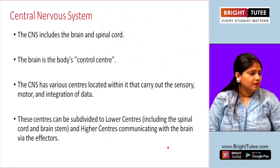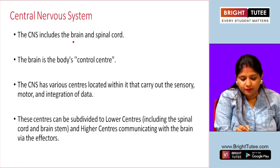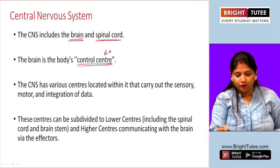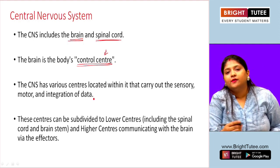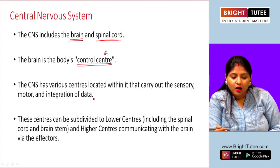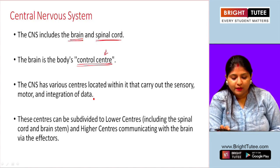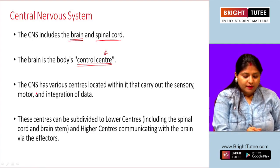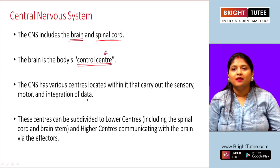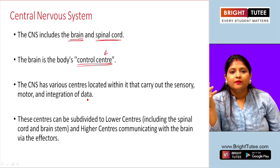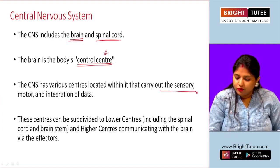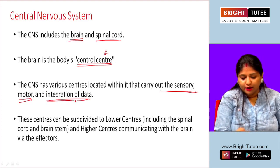The central nervous system includes the brain and spinal cord. The brain is the body's control center — it controls all bodily functions, controls different reactions, and how our hands and legs move. It is the most important part of the body, which is why it is aptly named the control center. The CNS has various centers located within it, such as centers for respiration, smell, taste, and heartbeat.